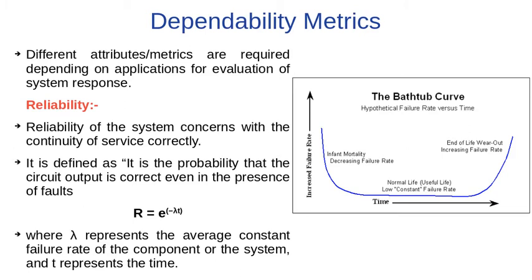Mathematically, reliability is described by this exponential function, where lambda represents the average constant failure rate of the component or the system and T represents the time.